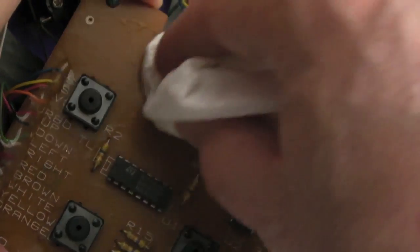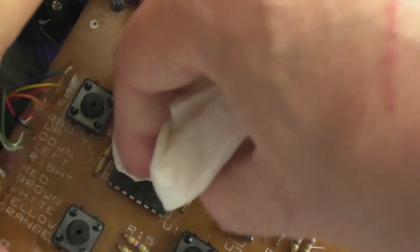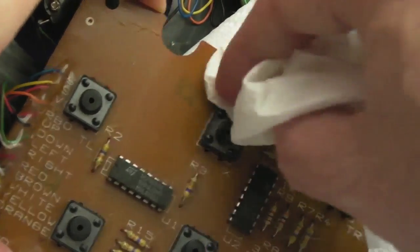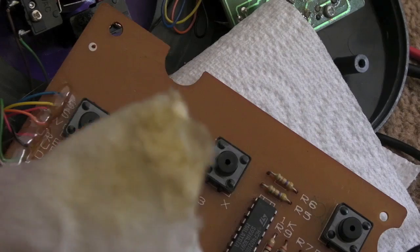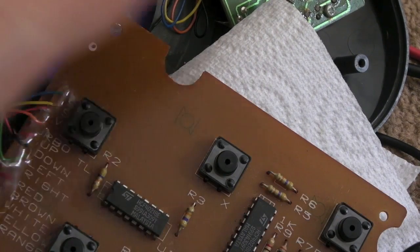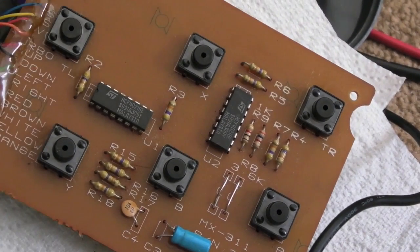So in terms of this side, just using some paper towel here with some IPA, we'll just go over the board like this. So you can see how dirty that was. Just go over the remainder of it now with a few cotton buds to get into the little gaps next to the resistors and things like that, but that's looking a lot cleaner already.